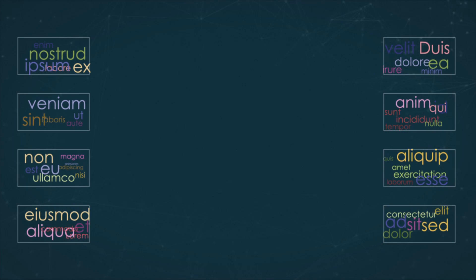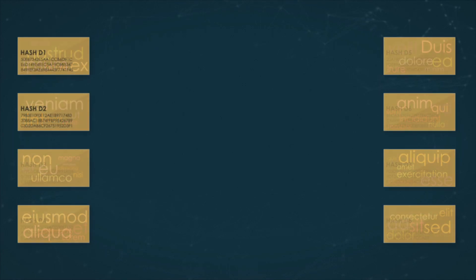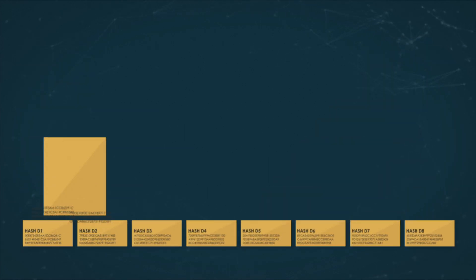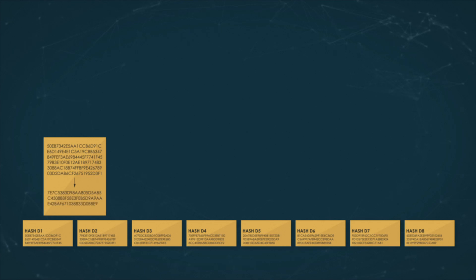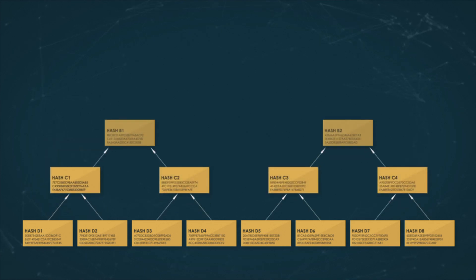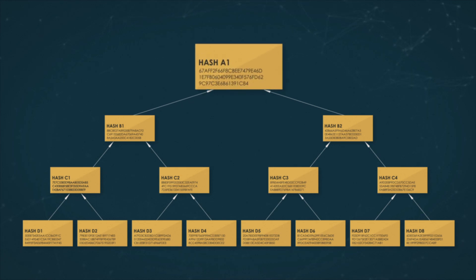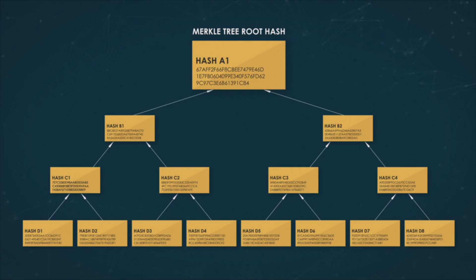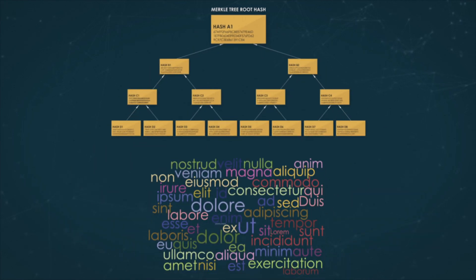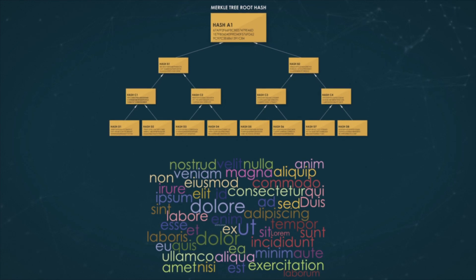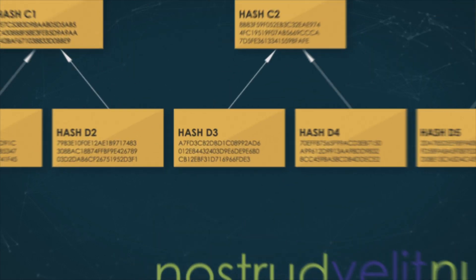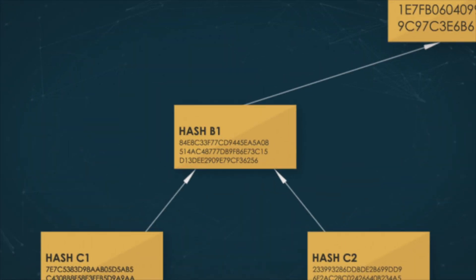Data is divided into sections. Each section is hashed. The resulting hashes are paired, the sum of every pair is hashed, new hashes are paired too, and so on, until only one hash remains. That last resulting hash is called the Merkle tree root hash, and it constitutes a digest of all collected data. So, just as with simple hashing, a change in any data section necessarily affects the root hash of the whole tree.